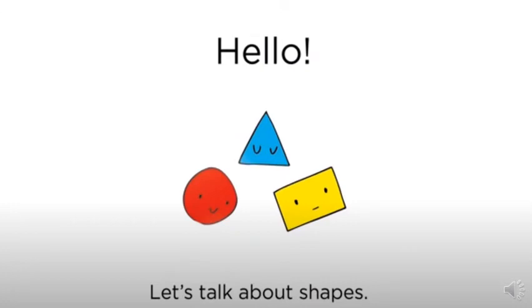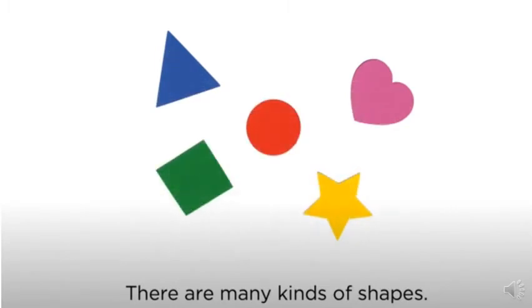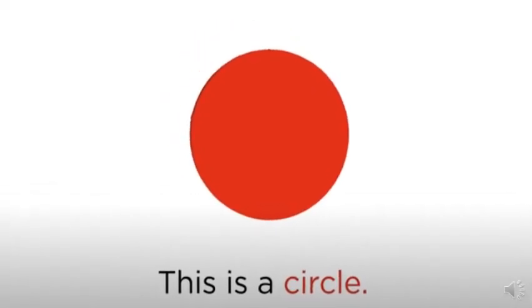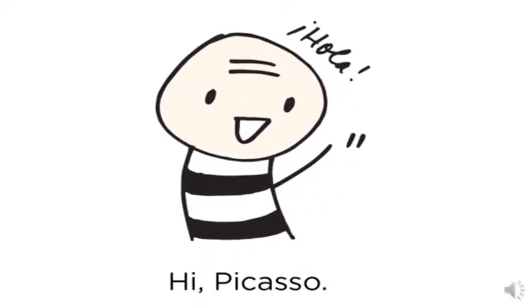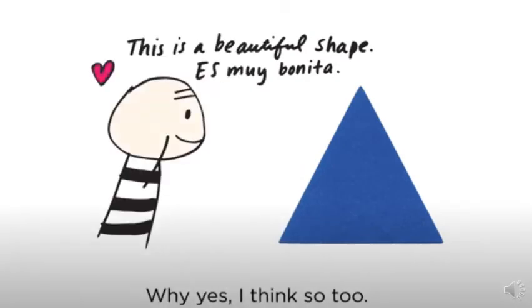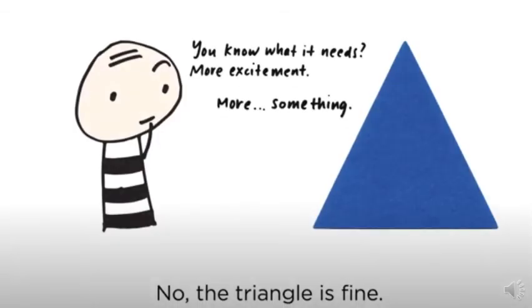Hello, Picasso. Let's talk about shapes. There are many kinds of shapes. This is a circle. Here is a rectangle. That is a triangle. Hi, Picasso. Hola, Picasso. This is a beautiful shape. Es muy bonita. Why, yes, I think so too. Do you know what it needs?